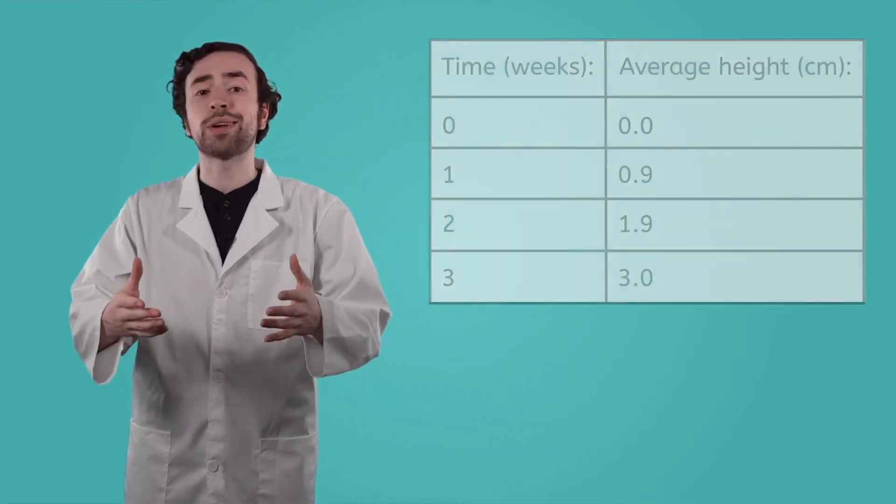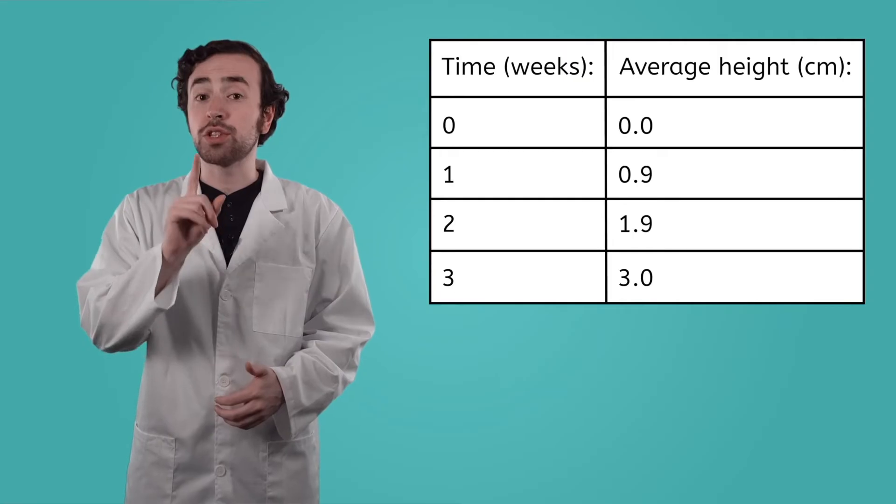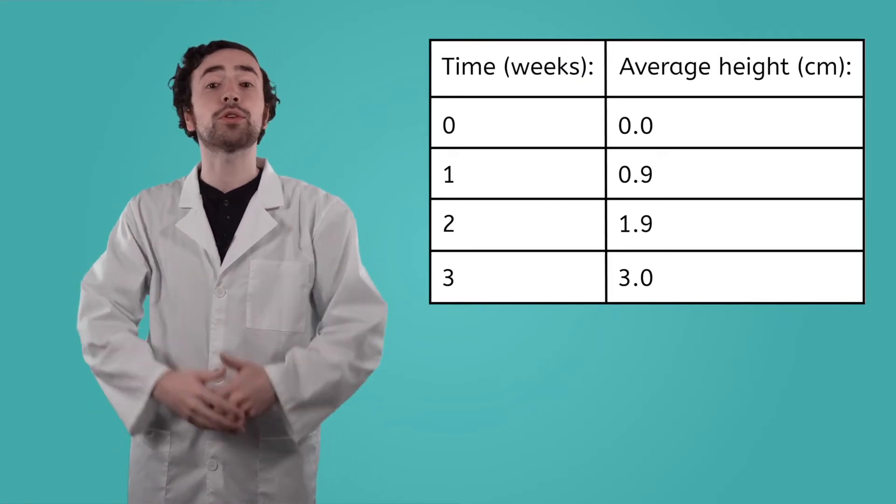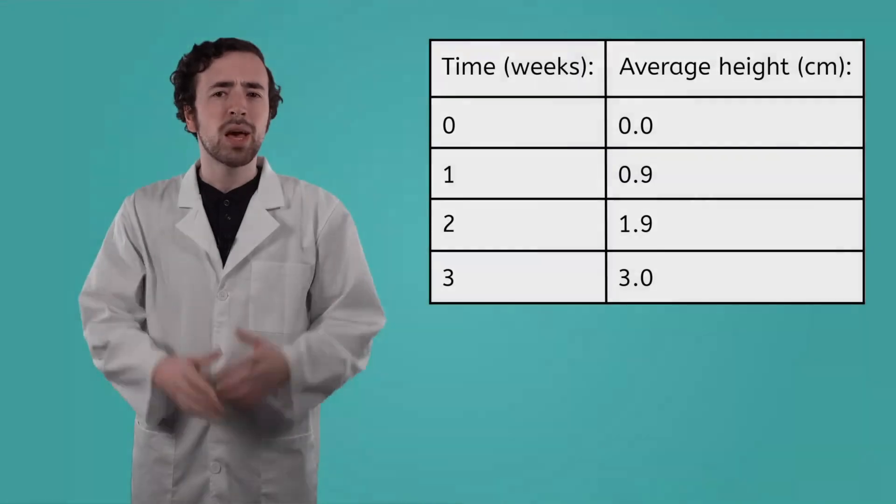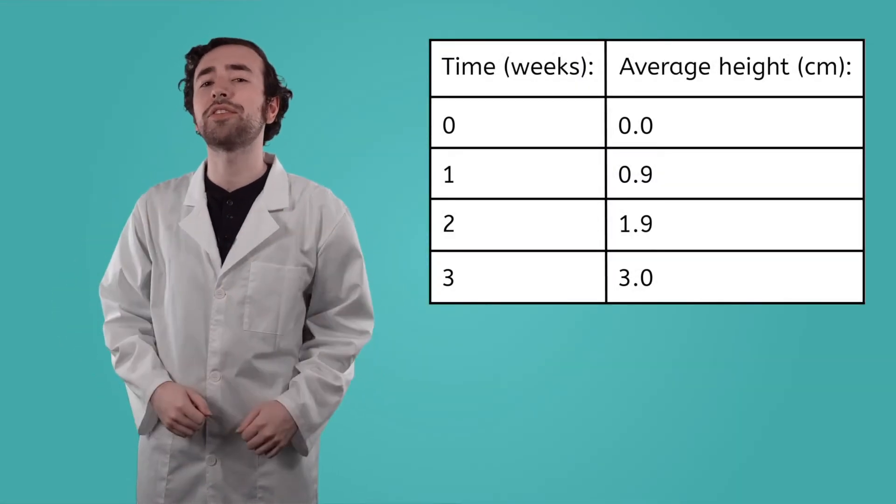The first step is choosing which type of graph is appropriate for our data. Let's say I want to graph the height of my strawberry plants over time. Which graph do you think will work best in this scenario? Pause the video here and write down your thoughts in your guided notes. Because I'm measuring change over time, a line graph is best.